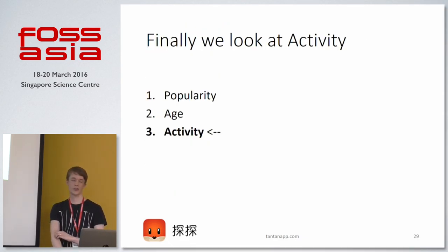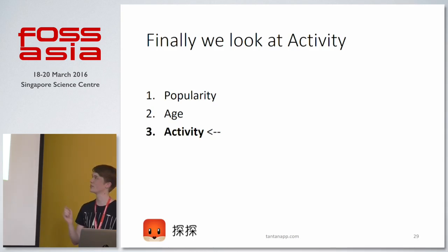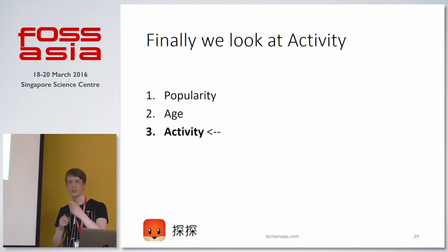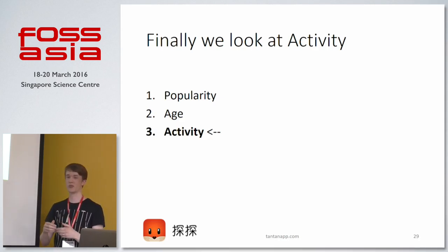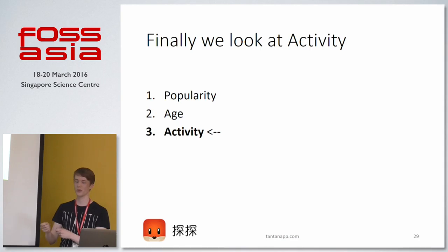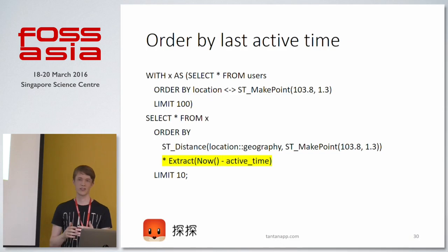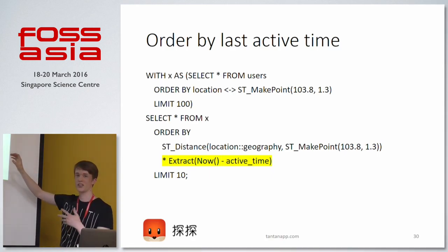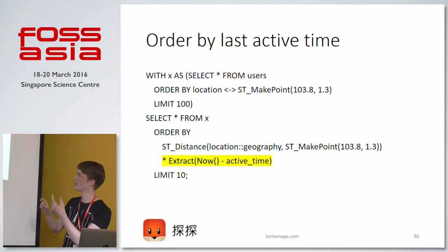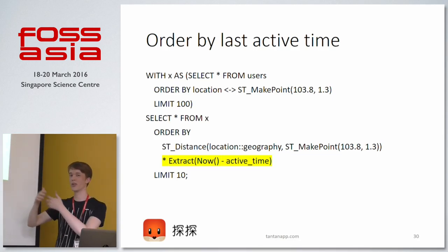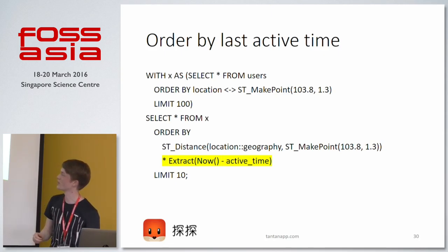Moving on to the final property: activity, which is the last active time. This is interesting because if I like you and you like me and we can start chatting, it's good if we are both active at the same time. If you were active in the app one month ago and I send you a message, you probably won't reply. So we also want to rank by activity. The normal style of doing this is just like popularity — select out 100 users ordered by distance, then among those 100 take distance times activity time (how many seconds ago you were active), with a LIMIT of 10.